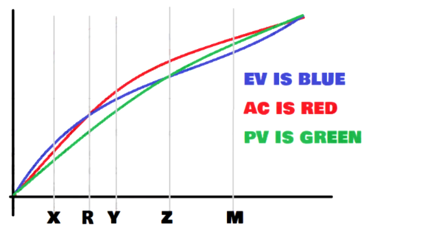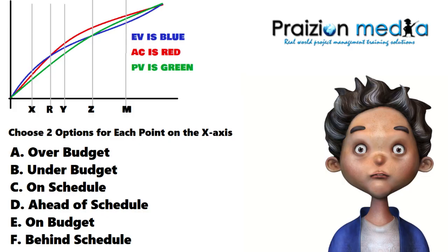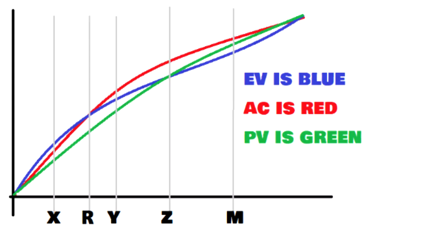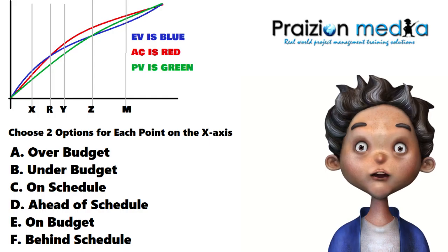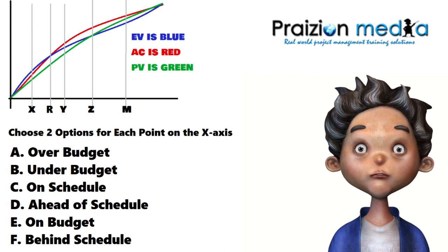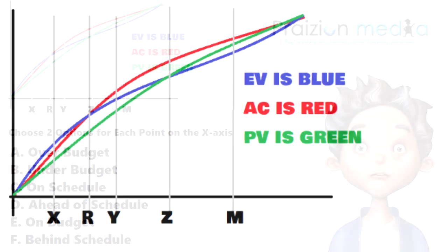All right, let's move on please to point X. Now I'm sure you already know that the Y axis is cost and the X axis is time. So, at point X in time, what is the state of the project? Choose two options and write them down on your piece of scratch paper. All right, time up. Let's move to the next one.